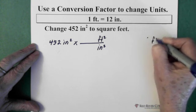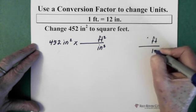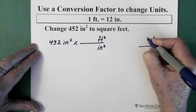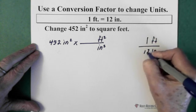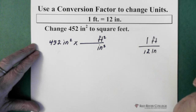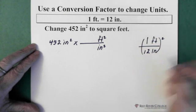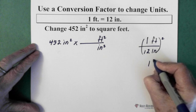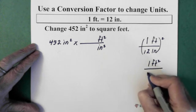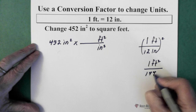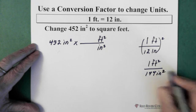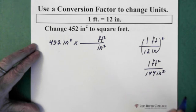We have feet over inches. And I know the relationship is 1 foot is 12 inches. And I want my units to be squared. So, I square the whole thing. And I'm left with 1 foot squared for 144 inches squared. Now, there's the conversion factor.